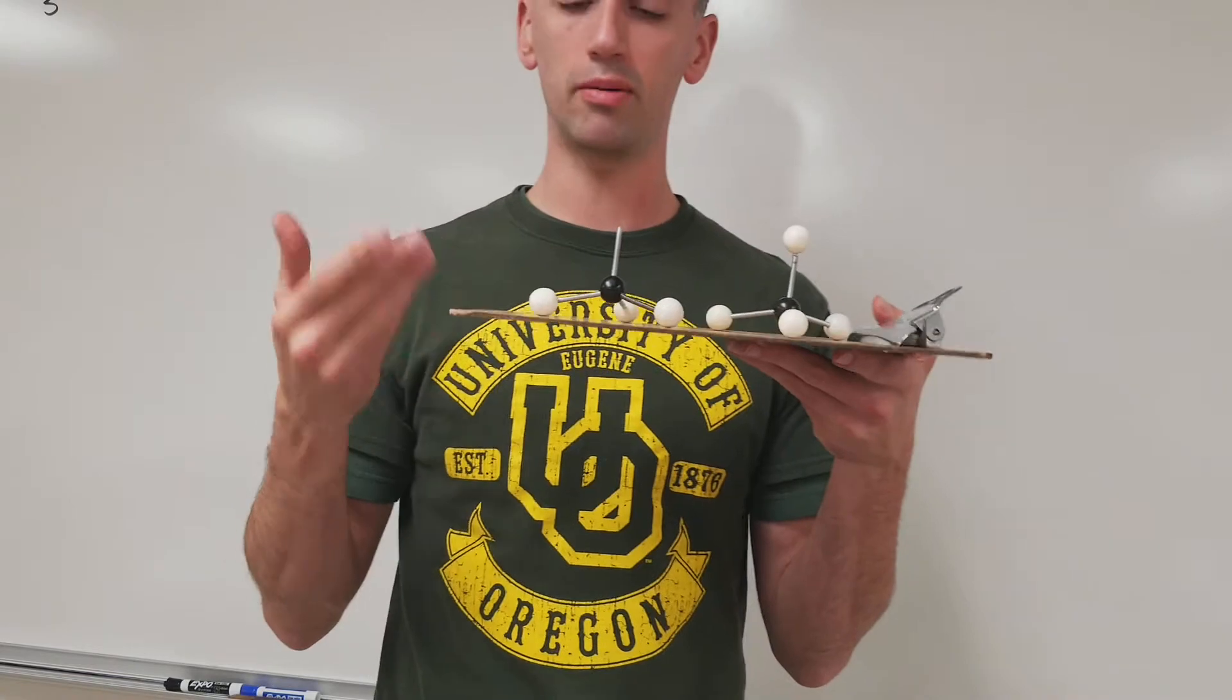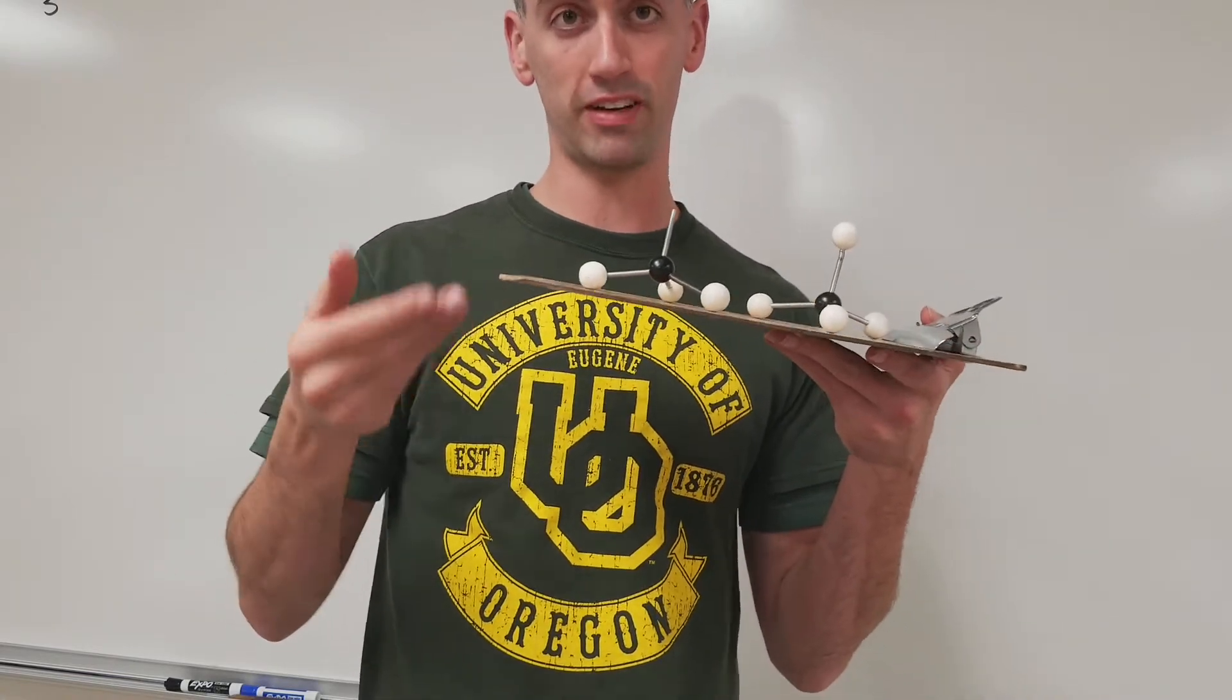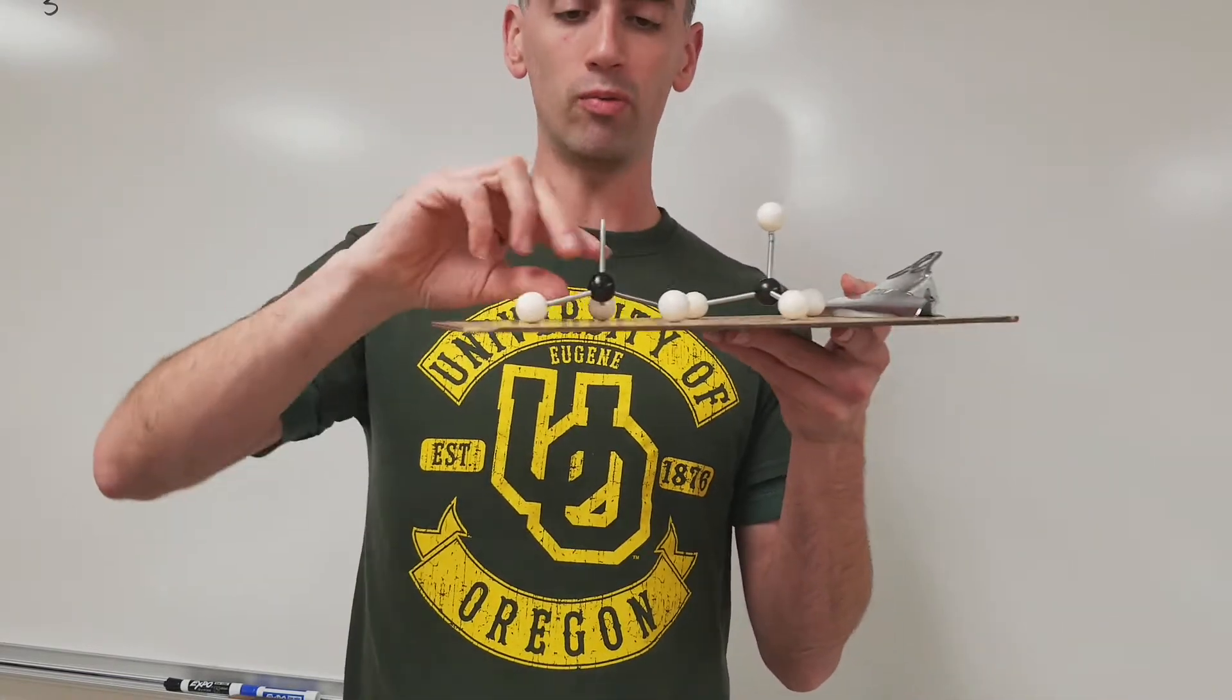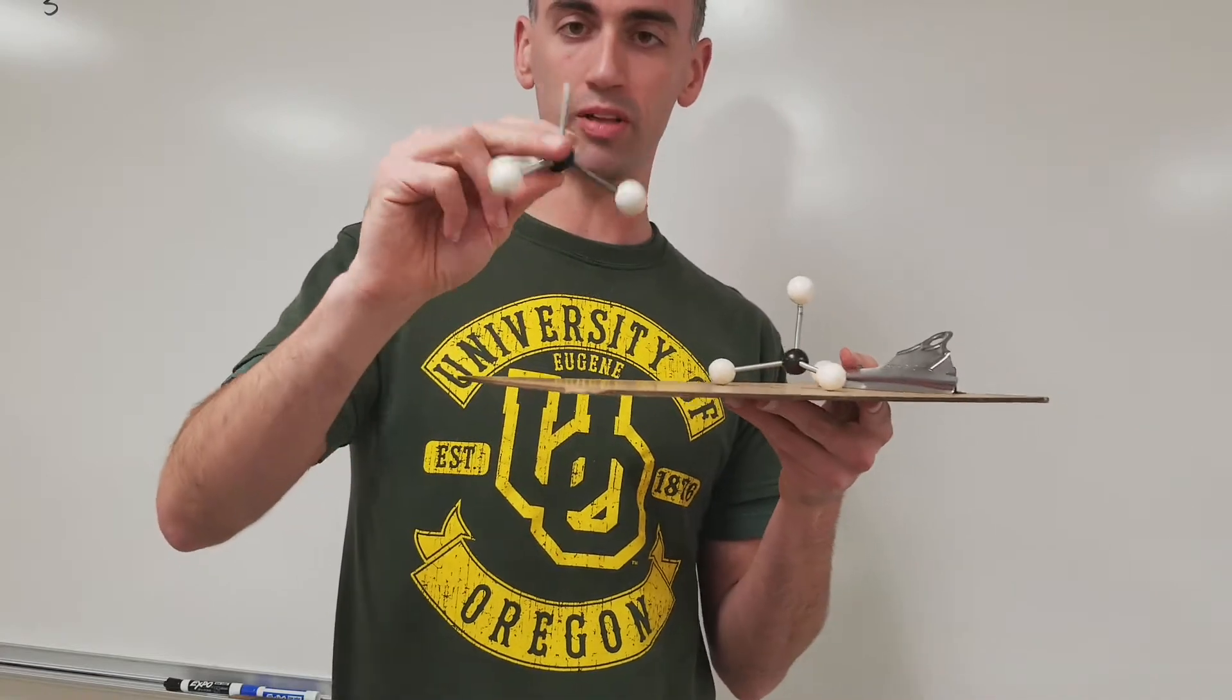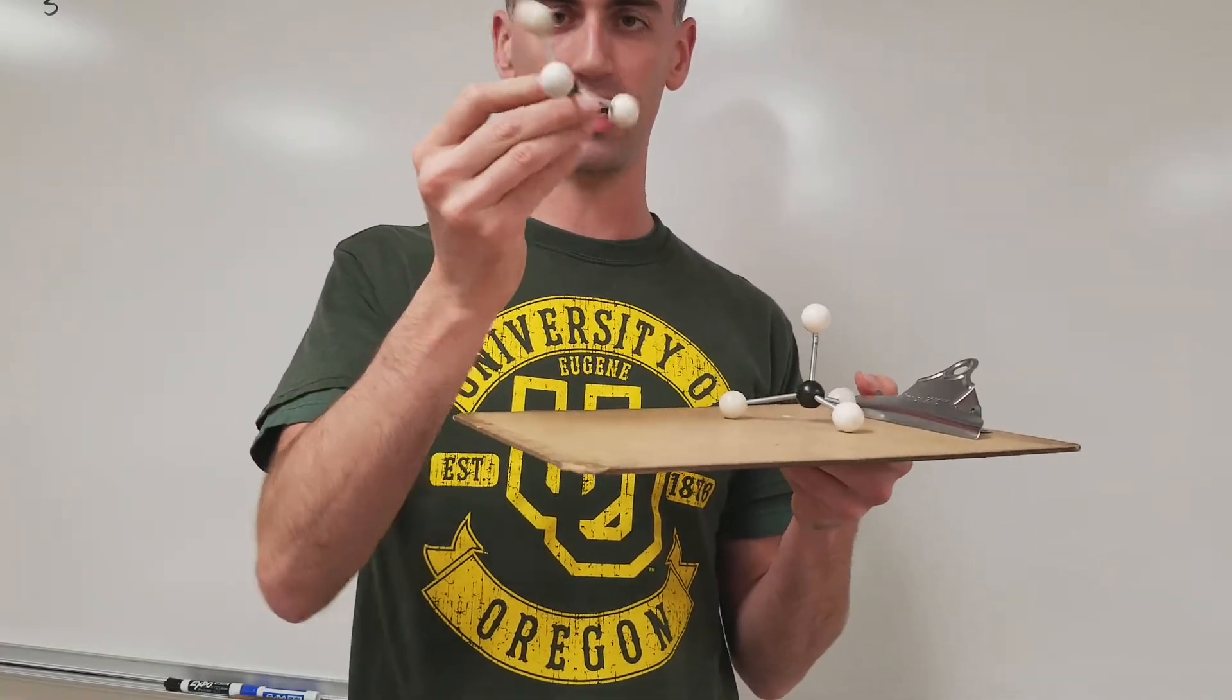So naturally, the non-bonding pairs influence what the final shape is going to be. But what do you look at here to determine the molecular geometry? Well, the molecule is made out of atoms. Look at just the atoms.